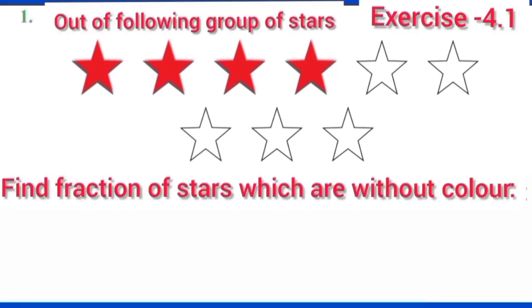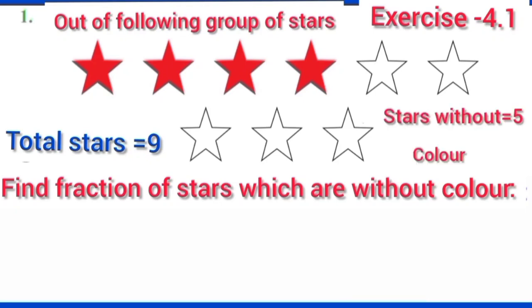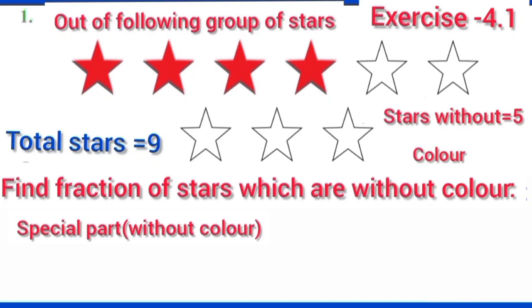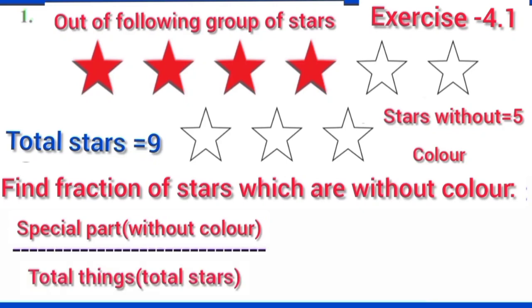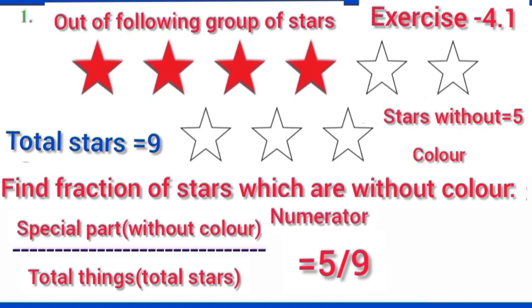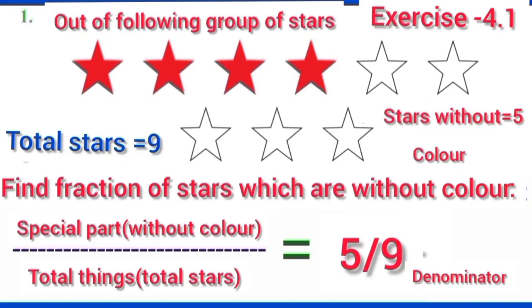Dear students, now we will find out the fraction of stars without color. Total stars are 9, and how many stars are without color here? 5 stars. So the fraction of stars without color is the special part — stars without color — upon total stars, which is 5 upon 9. Here, 5 is the numerator and 9 is the denominator.